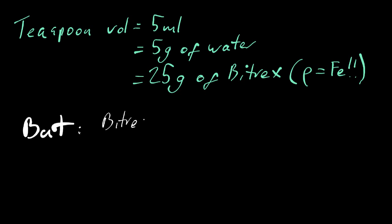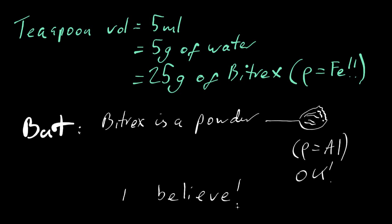But then I had a thought. Bittrex is a powder. So I think they mean they piled up the powder in the teaspoon, perhaps allowing double the volume. And if you pile it up in the teaspoon, then it gives you a density of about aluminium. Okay, I can accept that. That's quite a low-density metal.